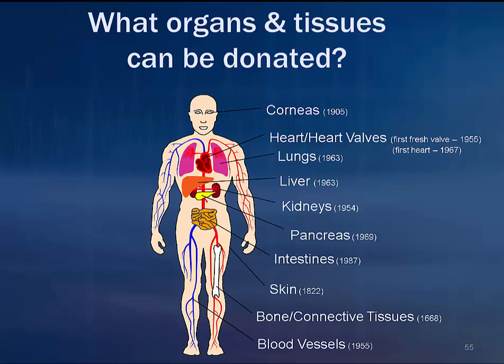Confirmatory testing for brain death includes cerebral angiogram, EEG, cerebral blood flow, and an observation period. An organ donor assessment includes past and current medical and social history, laboratory assessment, serological studies, cultures, organ-specific blood work, physical assessment, 12-lead EKG, echocardiogram, angiogram, chest x-ray, and bronchoscopy — all of these would be assessed.